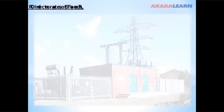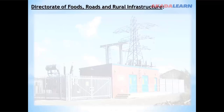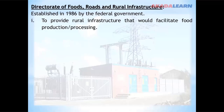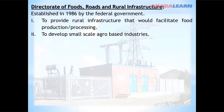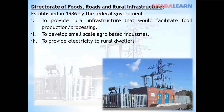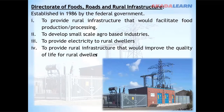Directorate of Food, Roads and Rural Infrastructure: This was established in 1986 by the federal government. The aims were to provide rural infrastructure that will facilitate food production and processing, to develop small-scale agro-based industries, to provide electricity to rural dwellers, and to provide rural infrastructure that would improve the quality of life for rural dwellers.